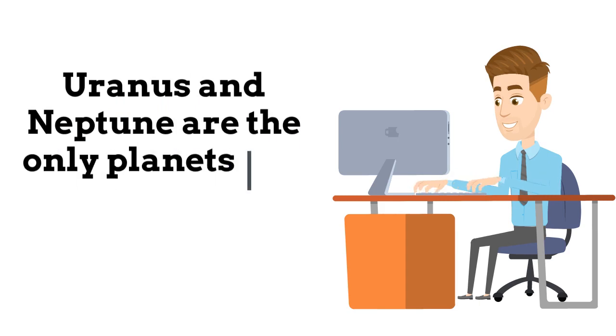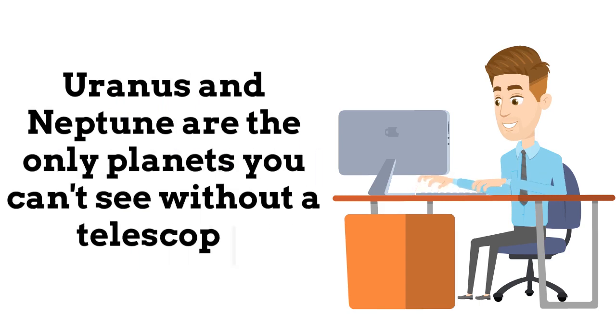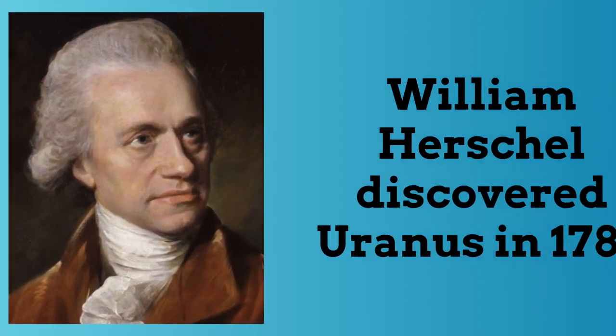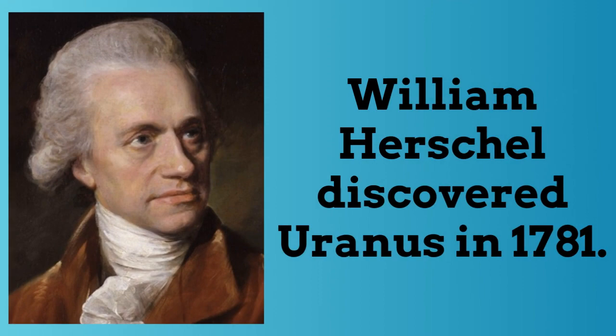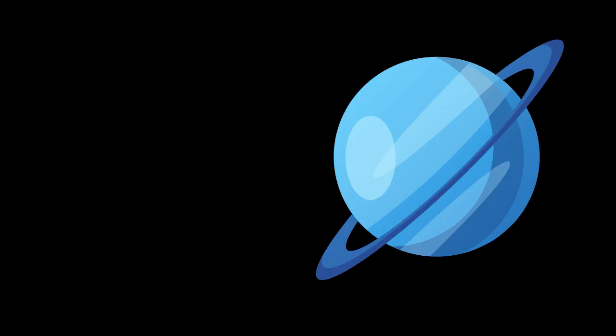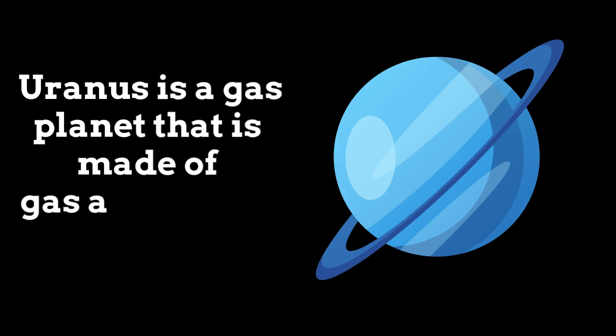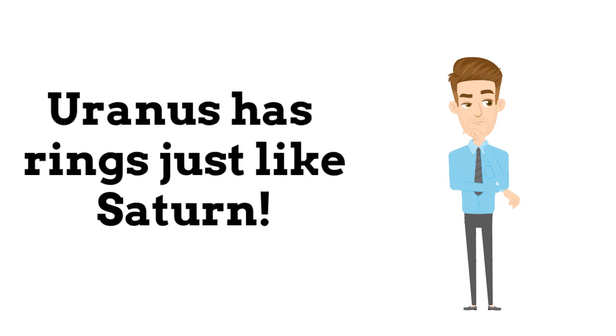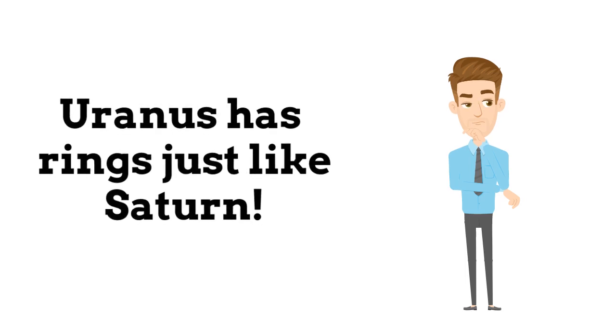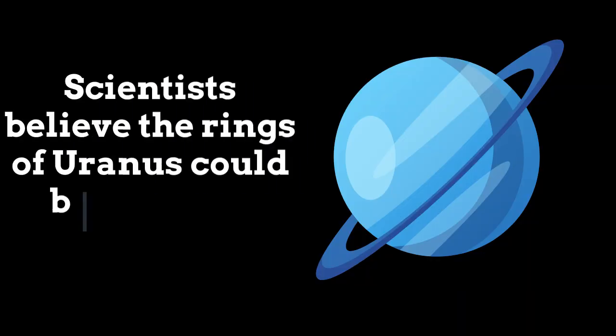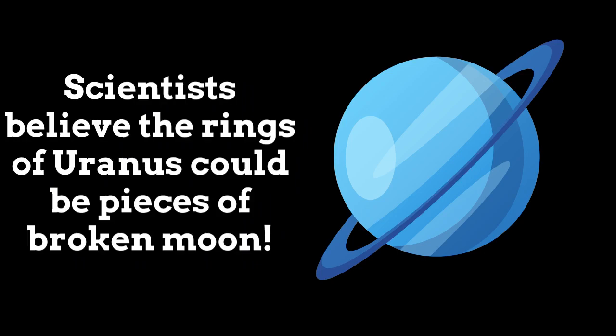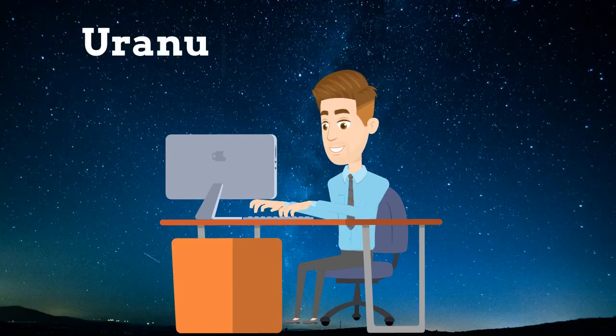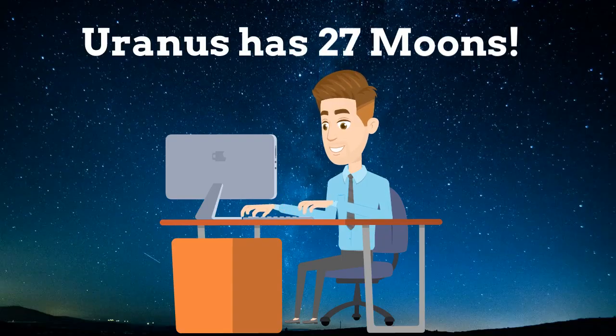Uranus and Neptune are the only planets you can't see without a telescope. William Herschel discovered Uranus in 1781. Uranus is a gas planet that is made of gas and liquid. Uranus has rings just like Saturn has rings. Scientists believe the rings of Uranus could be pieces of broken moon.